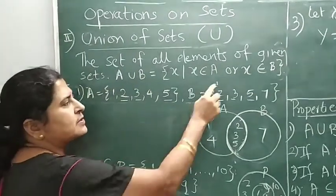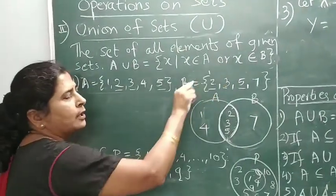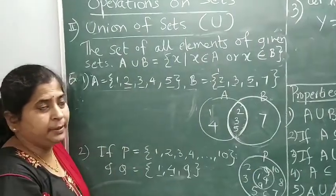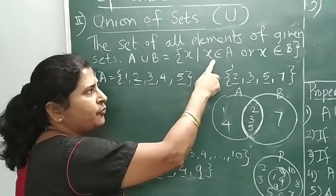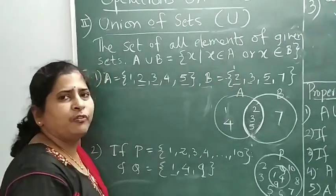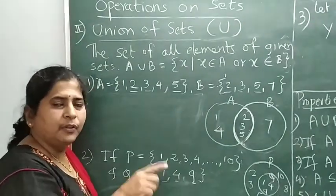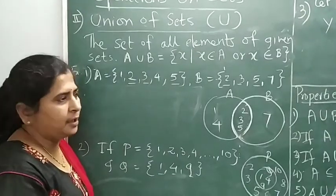For intersection we saw the word 'and' and here it is 'or'. What is the difference? In intersection it should be element of both sets A and B, but for union either it should be element of A or element of B. So we collect all elements of A and B in one set without repetition, and that set is the union of A and B.